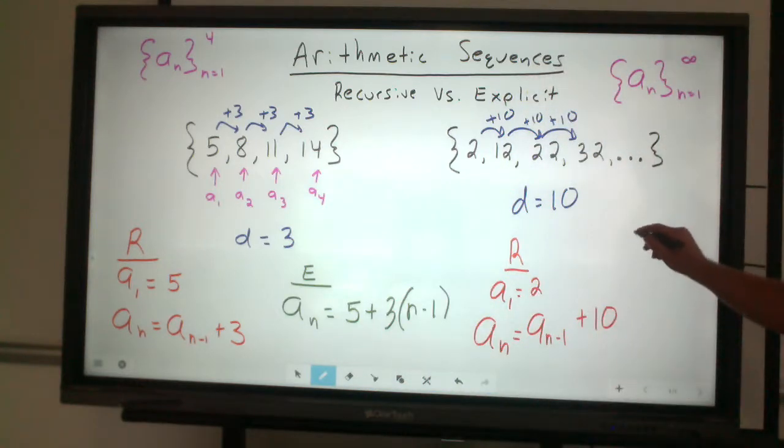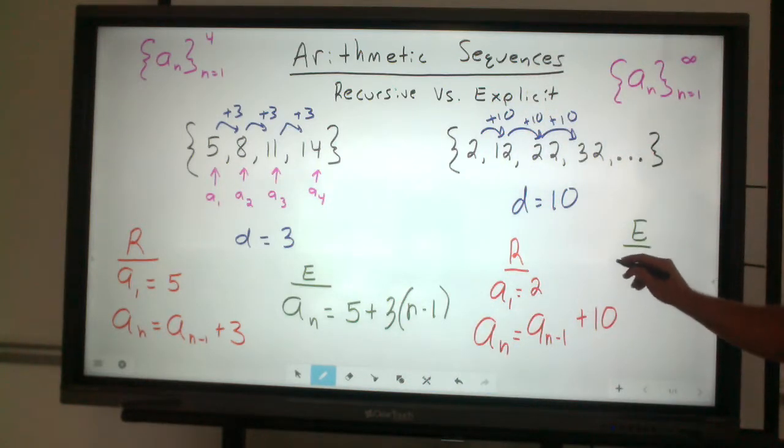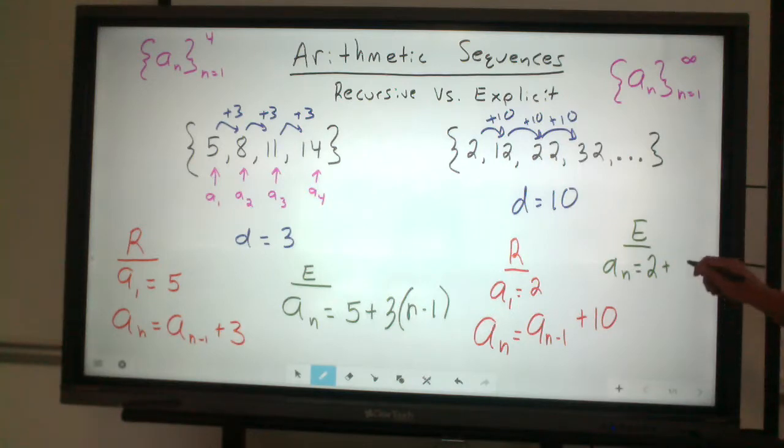For explicit, to find any term, we take that first term, which is 2, and we add on the product of the common difference times the previous term.